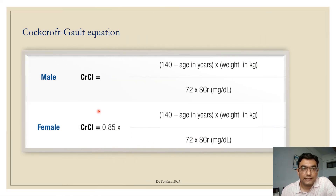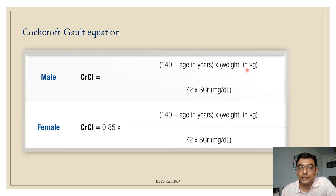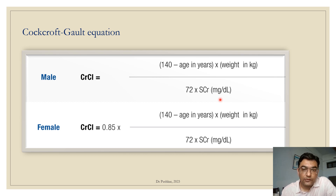The CG equation calculates creatinine clearance. For males: CrCl = (140 − age in years) × weight in kg) ÷ (72 × serum creatinine in mg/dL). For female patients, the result is multiplied by 0.85. However, this is a very old equation and is no longer recommended for routine clinical use.